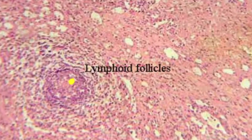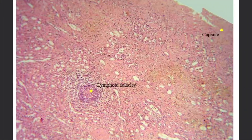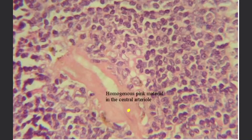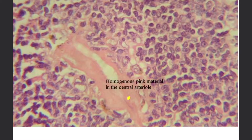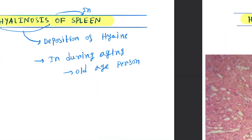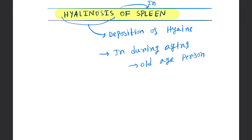The next feature is the homogeneous pink material in the central arteriole. In the central arteriole, a homogeneous pink material is present.